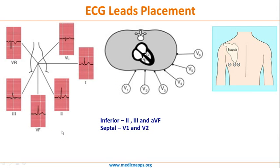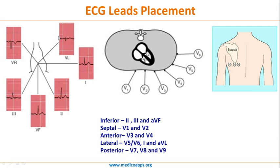Overall summary: septal part — V1, V2; anterior part — V3, V4; lateral part — V5, V6 and aVL; inferior part — II, III and aVF; posterior part — V7, V8, V9. Knowing which leads capture which part of the heart is very important for localization of disease pathology in cardiac conditions.